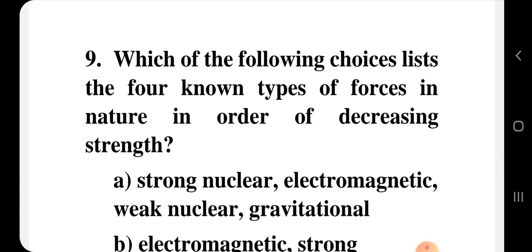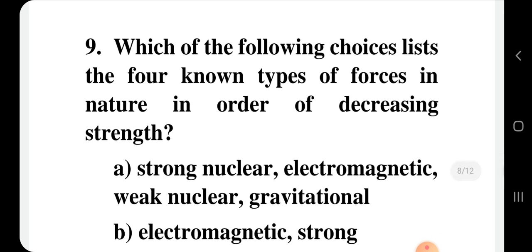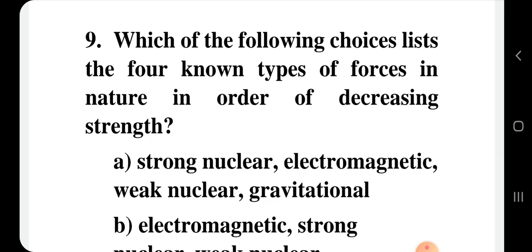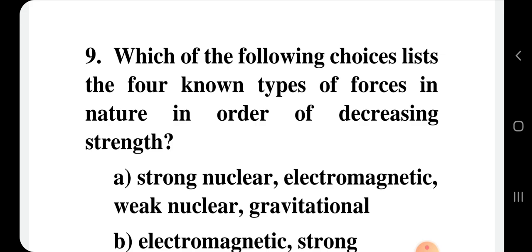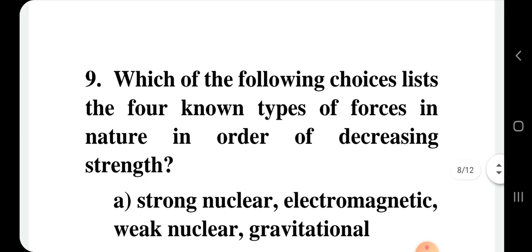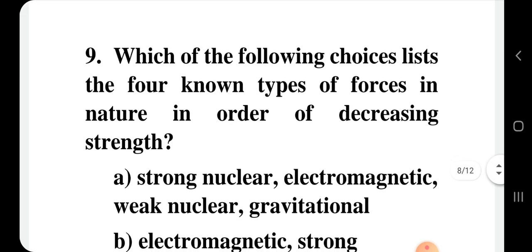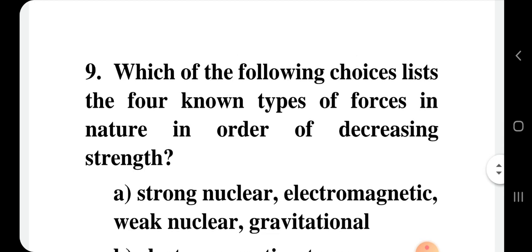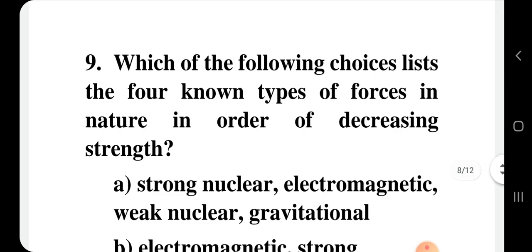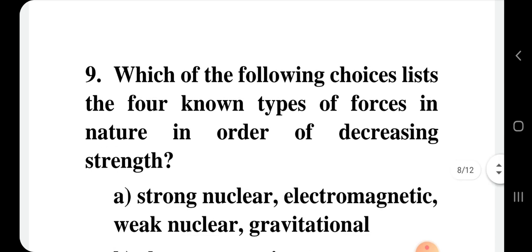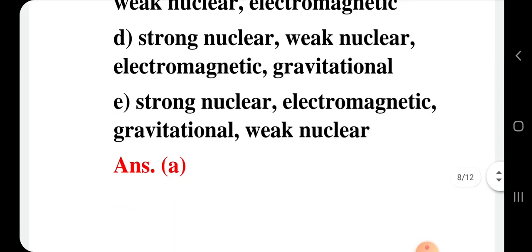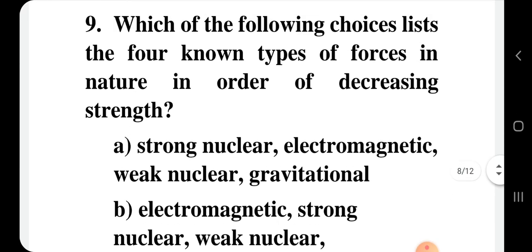Question number 9: Which of the following lists the four known types of forces in nature in order of decreasing strength? You should know the four fundamental forces and their relative strengths. Strong force is the strongest; electromagnetic force is 100 times weaker than strong force; then weak force; and gravitational force is the weakest. So in decreasing order: strong force, electromagnetic force, weak force, gravitational force. The correct option for question 9 is option A.